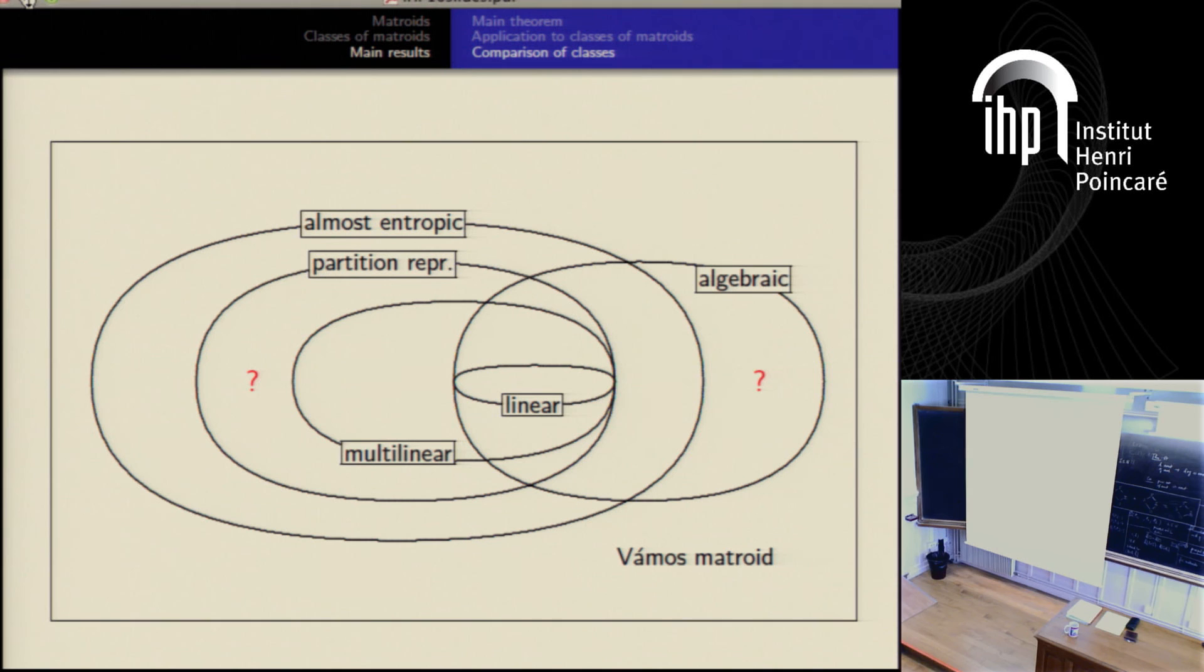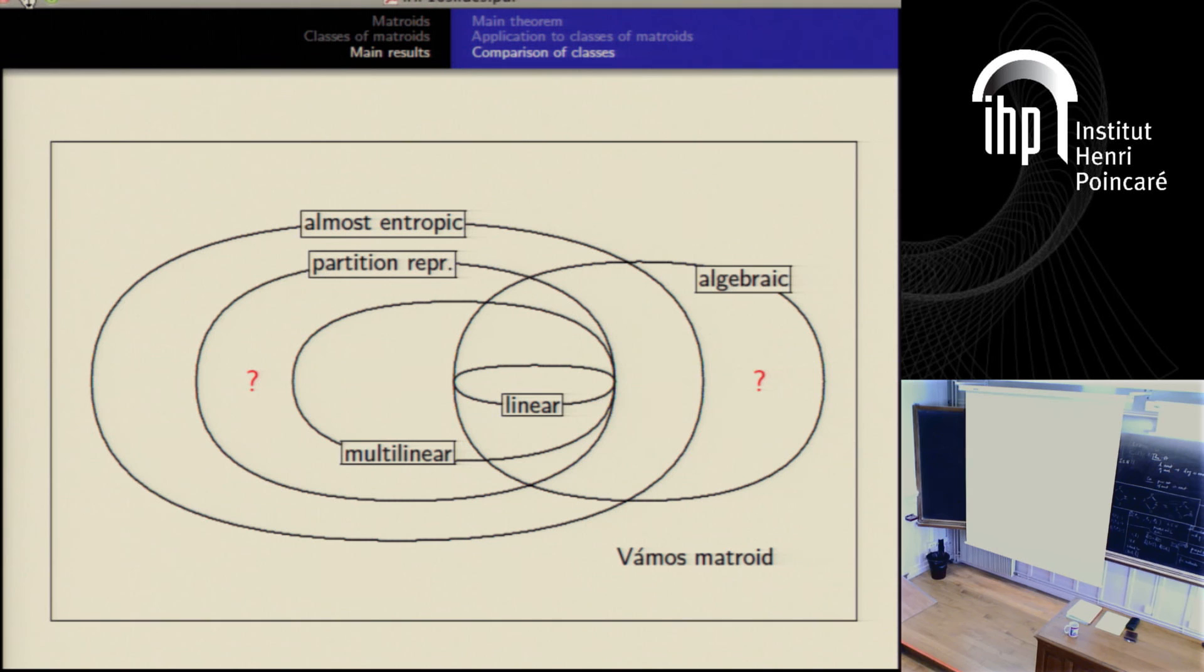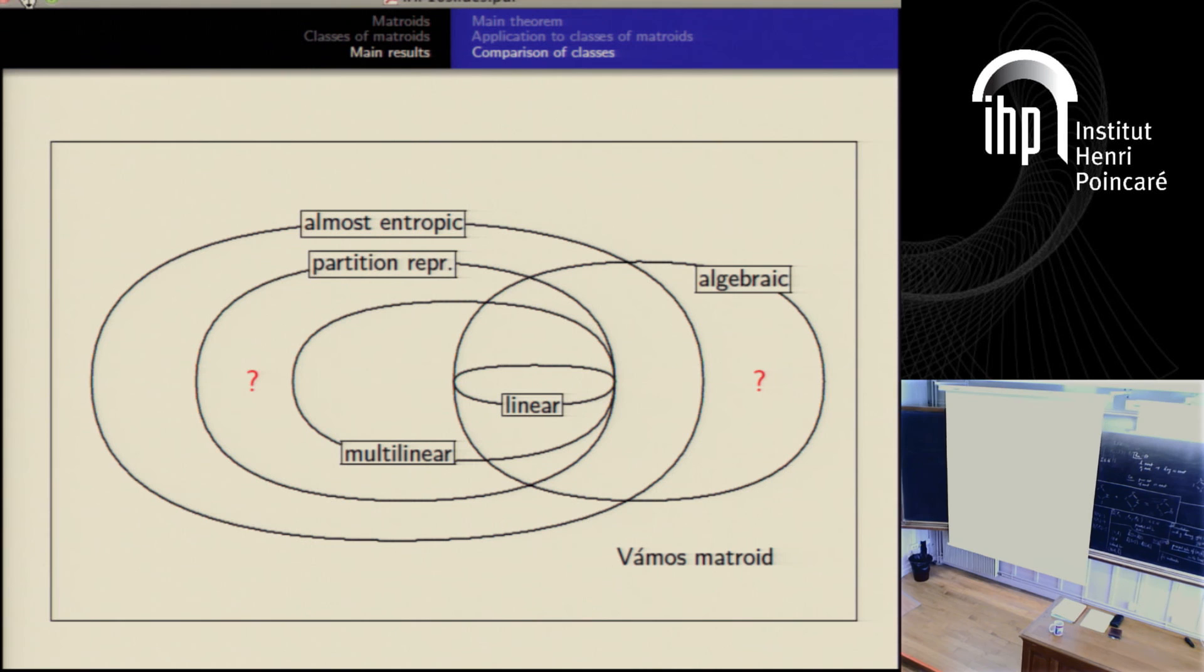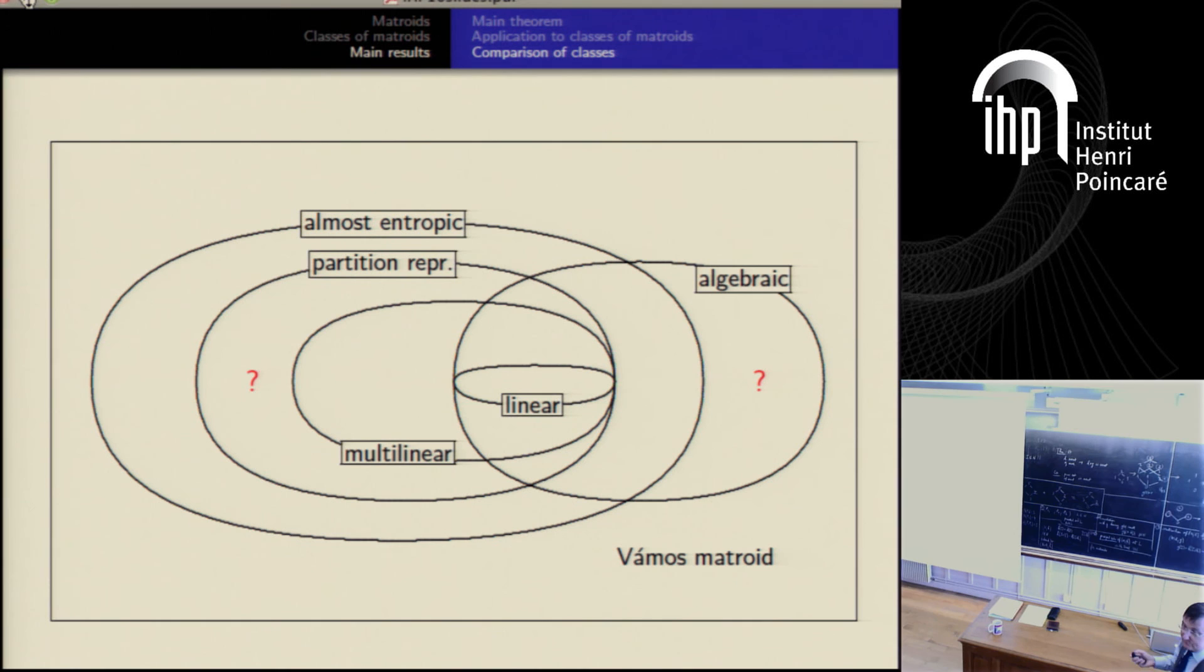So I don't know whether algebraic implies almost entropic. Maybe yes, yes. But if this is true, then that would mean that almost entropic is very broad class. That contains almost all non-classes or all non-interesting classes. And that would be probably reasonable, because entropy is very, very general concept. And that should cover all kinds of algebra and combinatorics. And somehow, if something is represented approximately by entropies, then that should be very general. So I would say that this is empty, but I don't know.